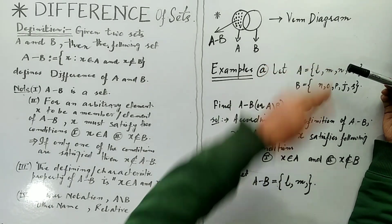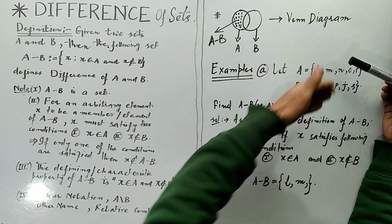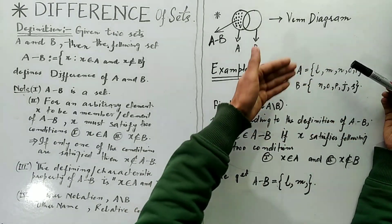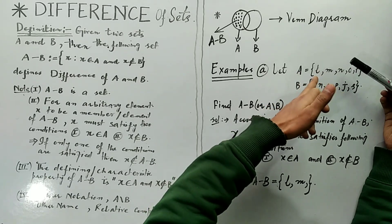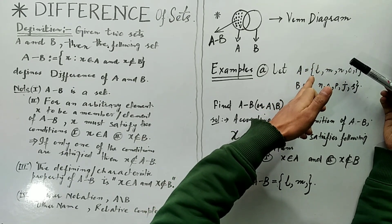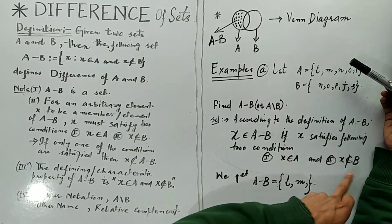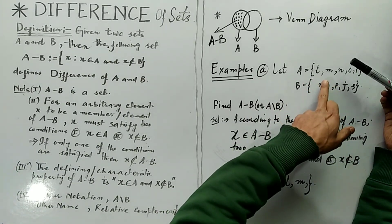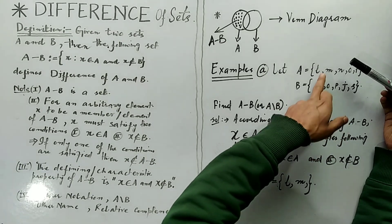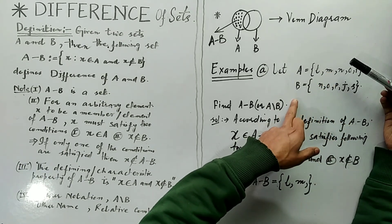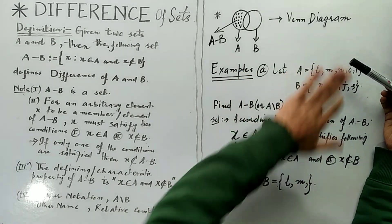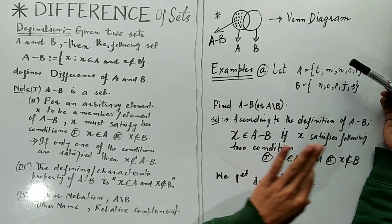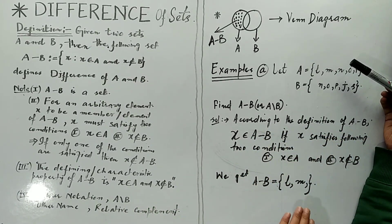Similarly, applying the definition to element M: does M belong to A? Yes, obviously M belongs to A. And M must not be an element of B — M does not belong to B. So M satisfies both conditions, which means M is going to land in A minus B.